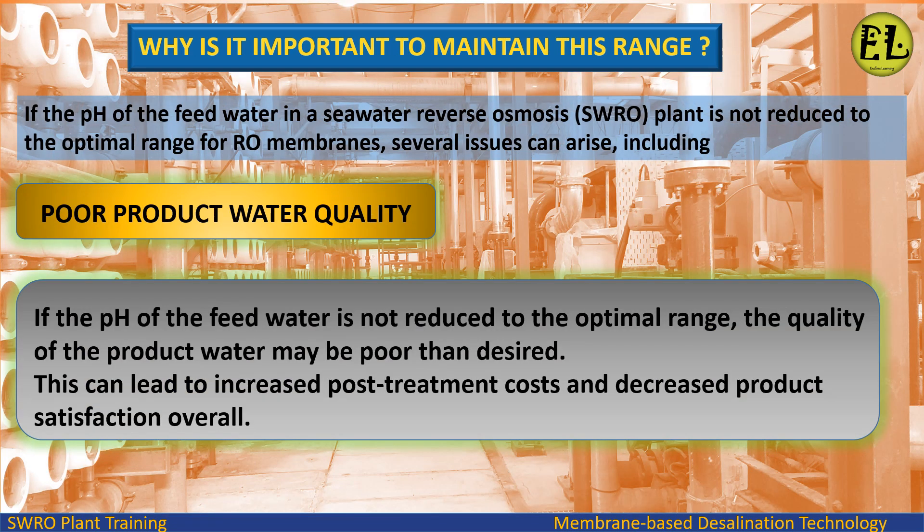Poor product water quality: if the pH of the feed water is not reduced to the optimal range, the quality of the product water may be poorer than desired. This can lead to increased post-treatment costs and decreased product satisfaction overall.